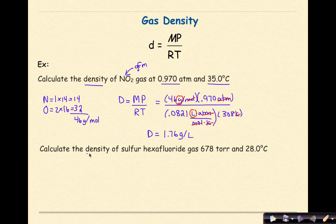Calculate the density of sulfur hexafluoride gas with a pressure of 678 torr and 28 degrees Celsius. Sulfur hexafluoride is SF6, and the gram formula mass is 146 grams per one mole. 28 degrees Celsius plus 273 gives 301 kelvin. Because I'm working with torr, I need to use the right gas constant, which is 62.36 liters times torr over moles kelvin.